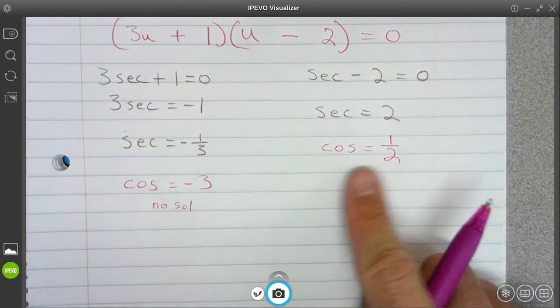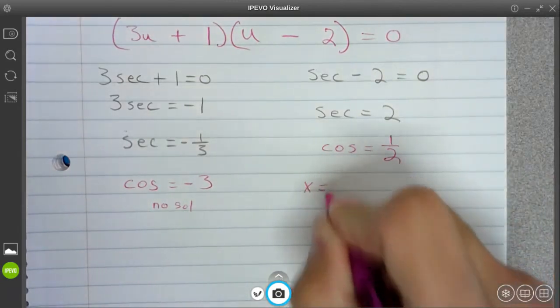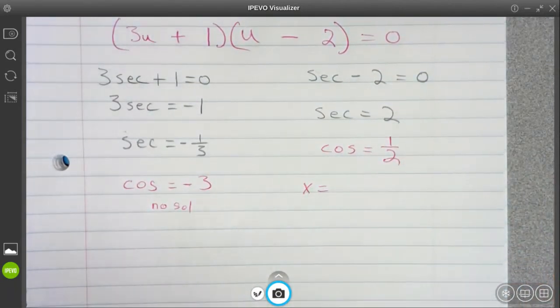This one's not too bad. Cosine is equal to positive 1 half. All right, for cosine to give me positive 1 half, it's going to be in quadrant 1 and in quadrant 4.